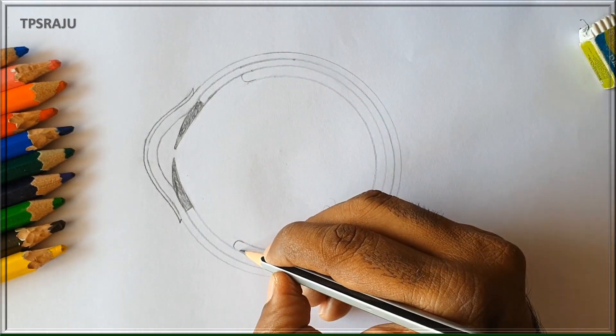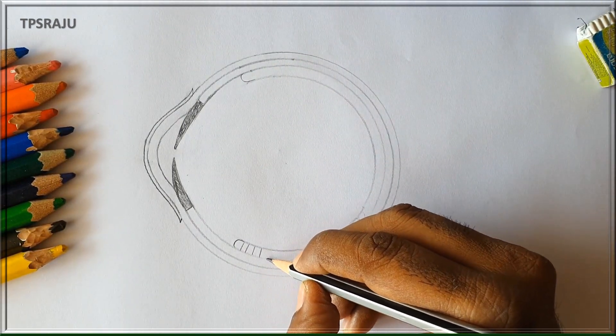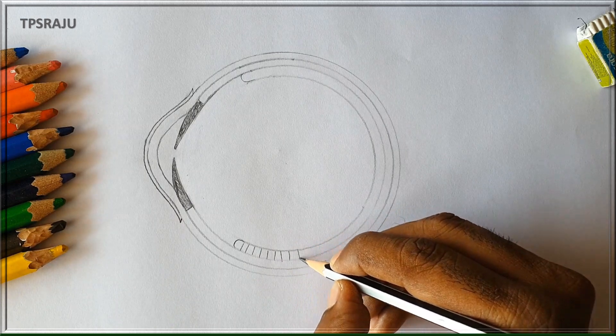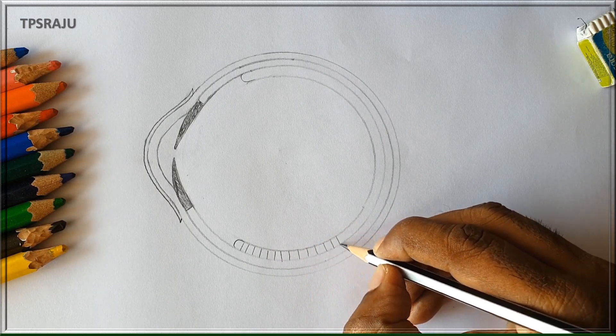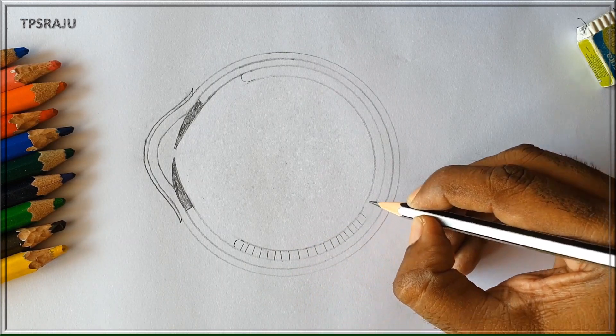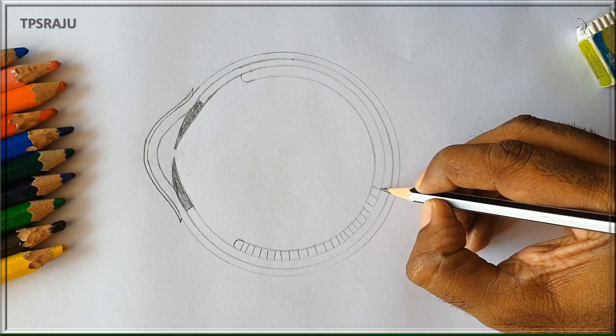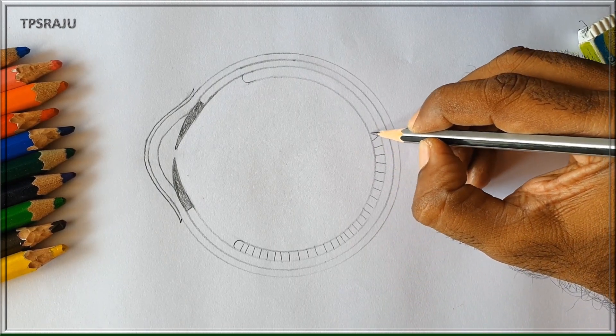The inner and third layer is retina. It has millions of sensory receptor cells called rods and cones. Now we are drawing the rods and cones in the retina.